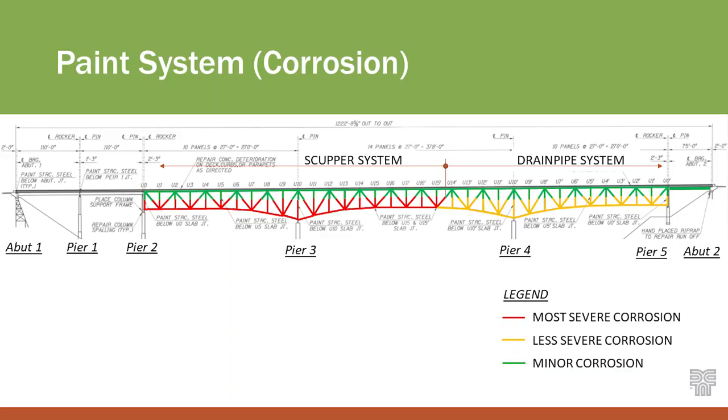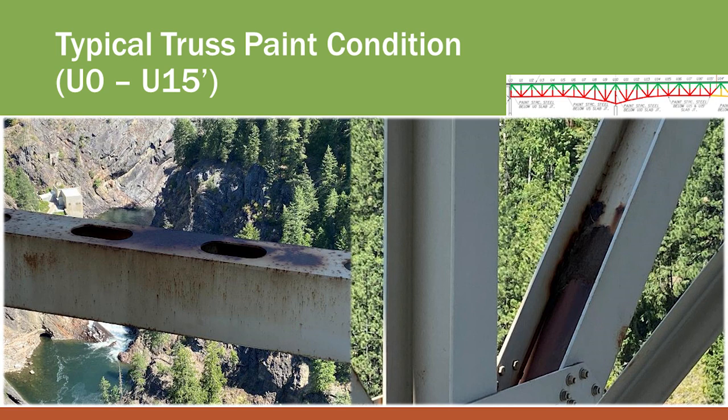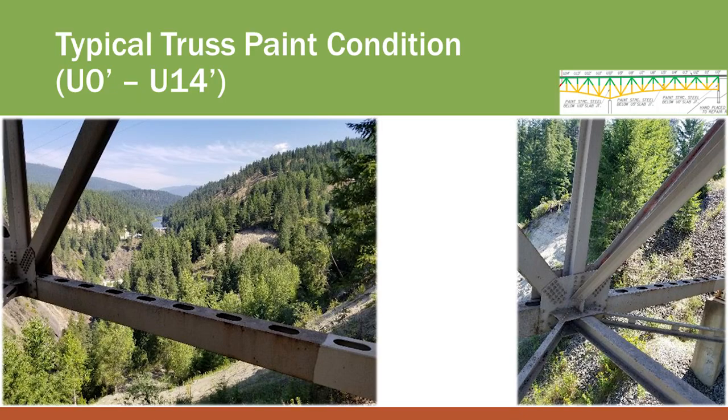The truss had two intermediate expansion joints due to its construction — it's like a cantilever truss with a drop-in span. Those joints in the deck leaked, which caused all kinds of grief on the painted steel. So ITD removed those joints, replaced it with continuous deck from end to end of the truss. And included with addressing those leaking joints, they did some significant zone painting.